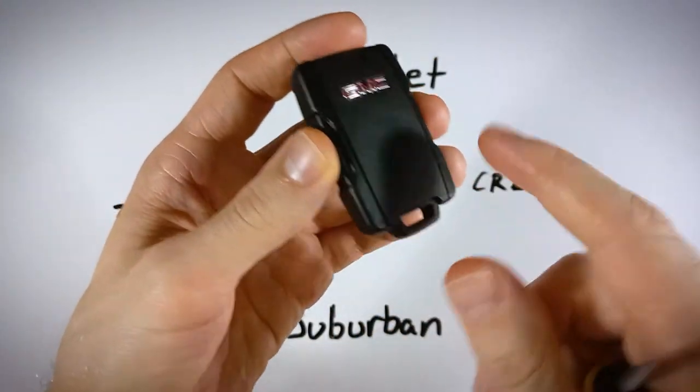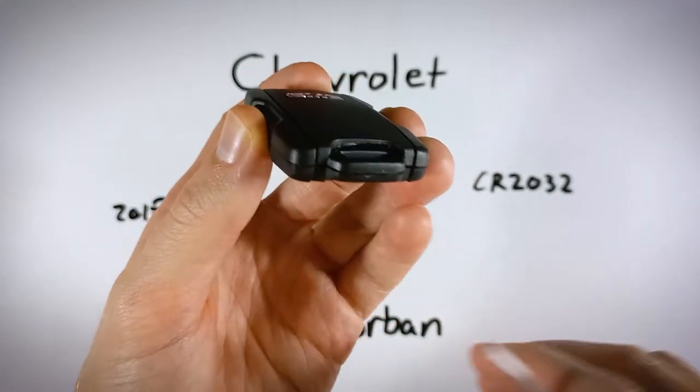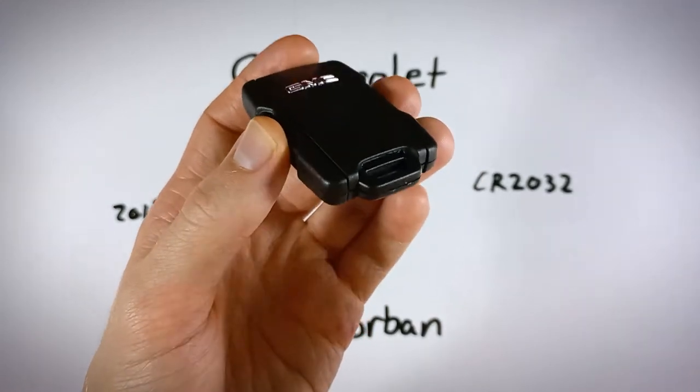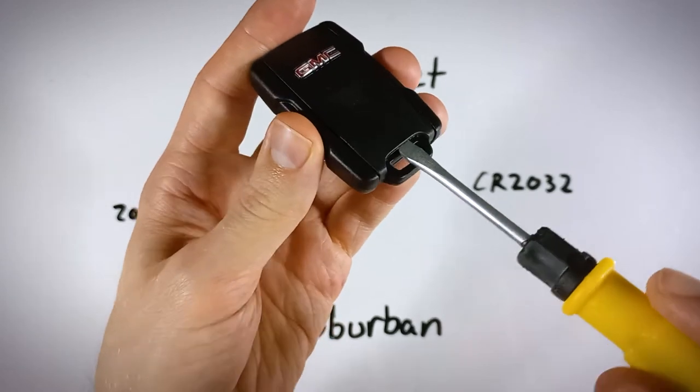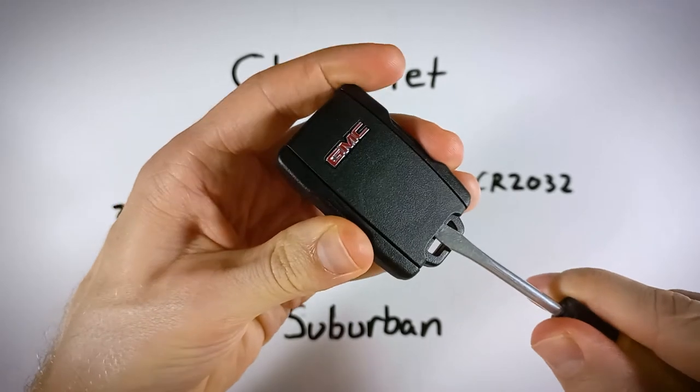The first step is just to flip this thing over and look down here where the key ring would attach. You can see there is an opening in here. It's a slot for us to put our flathead screwdriver into. So go ahead and insert it in there. Hold your device by the sides, not on the top here, and just gently twist.